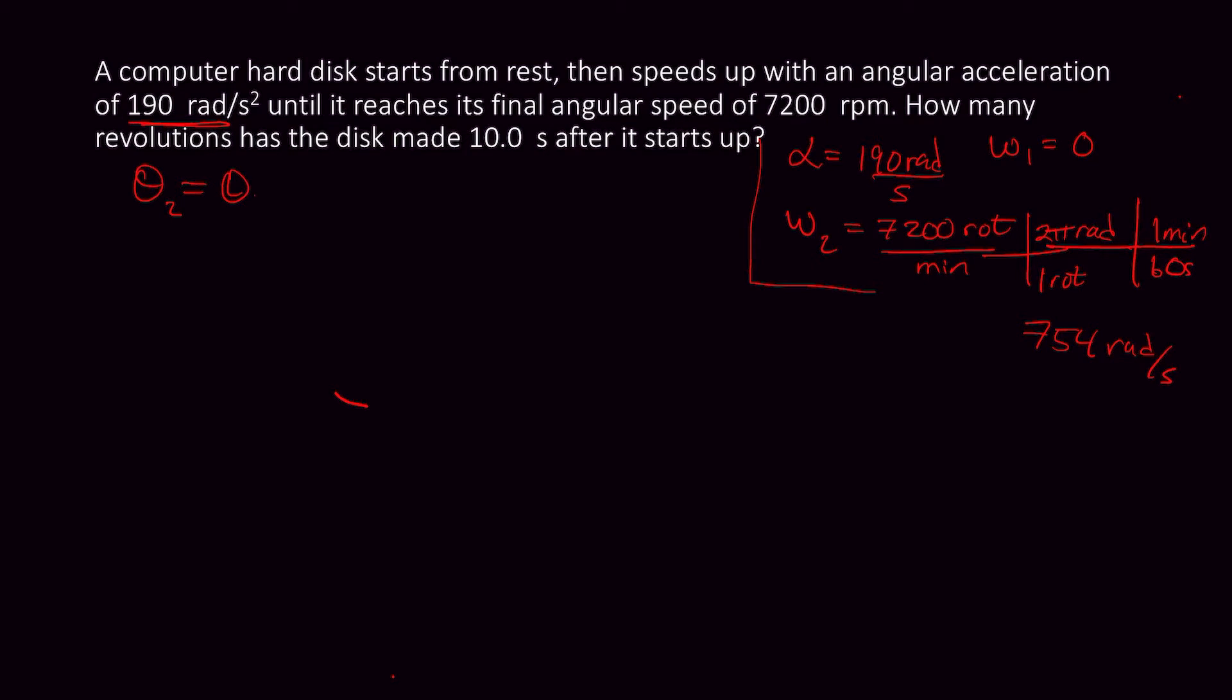θ2 is θ1 plus W1t plus 1/2 αt squared. And if you're just trying to solve for this, you'd say, well, I know that α is 190 right here, and I could just plug that in, and I got this 10 second thing, and I could just solve the problem. But that's going to assume that it accelerates the whole time.